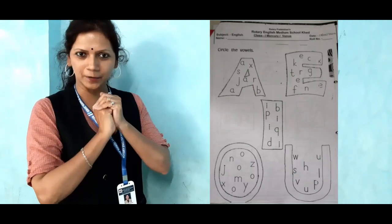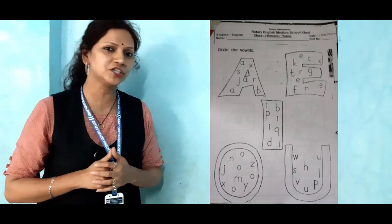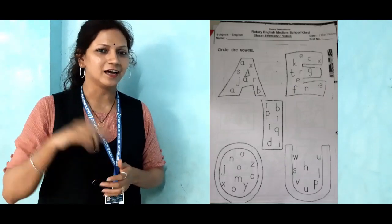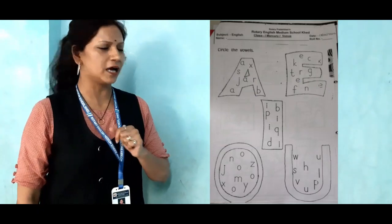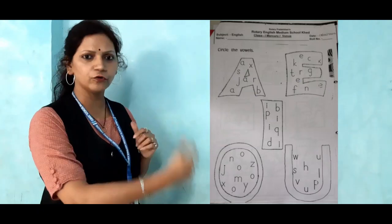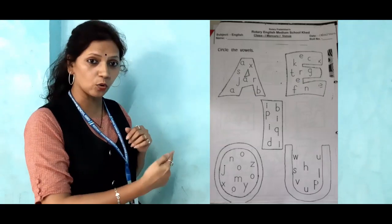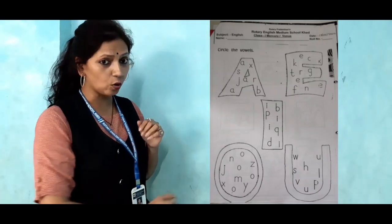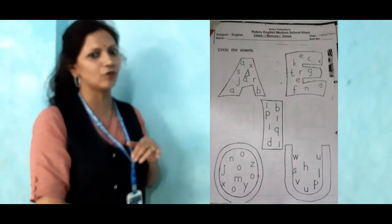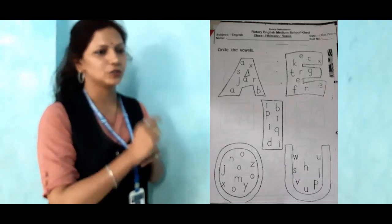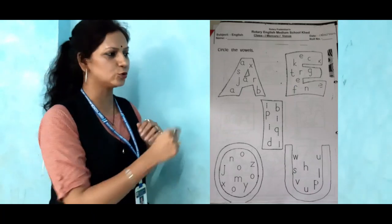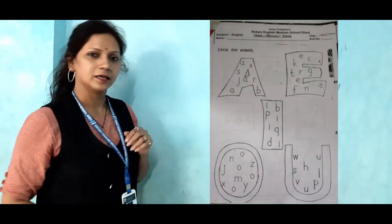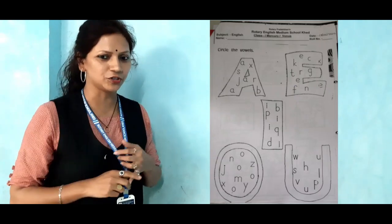Now next, Anushree. Are you present Anushree? You have to give me the answer of O. Can you see this O? In the O vowel, there is again the vowel. So Anushree, you have to circle the O. Very good Anushree.